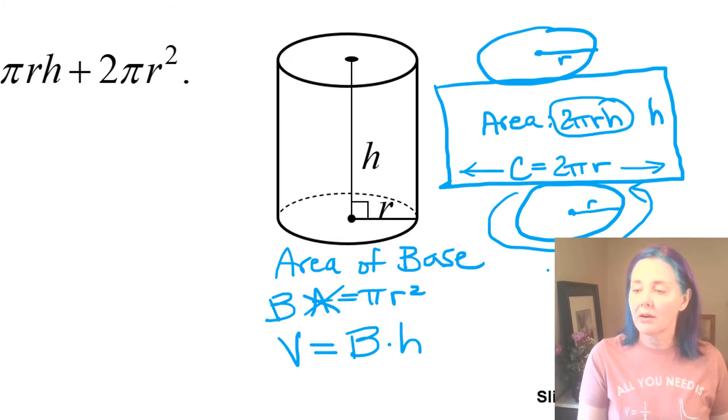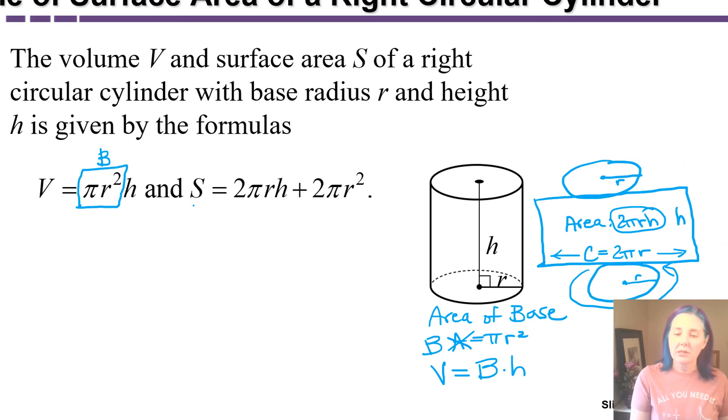Okay, but that doesn't include the area of the top and the bottom. Let's look at this surface area formula over here. 2 pi r h is the sides of the can that we just found. Where do you think they're getting the 2 pi r squared from? Well, those are the two circles. The area of this circle is pi r squared. The area of this circle is pi r squared. We have two of them. So the total surface area is 2 pi r h plus 2 pi r squared.